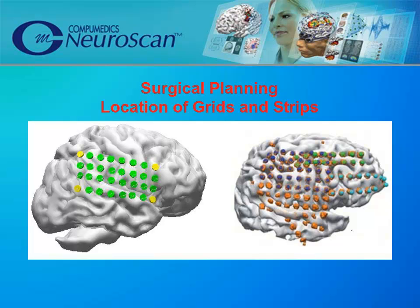Often the next step in clinical evaluation is to decide where to place cortical grids and strips. In this case, on the left, a 4x8 grid was placed. Additional grids and strips may be placed as well, as shown on the right. Labels are user defined, and the results can be saved in convenient formats or printed.